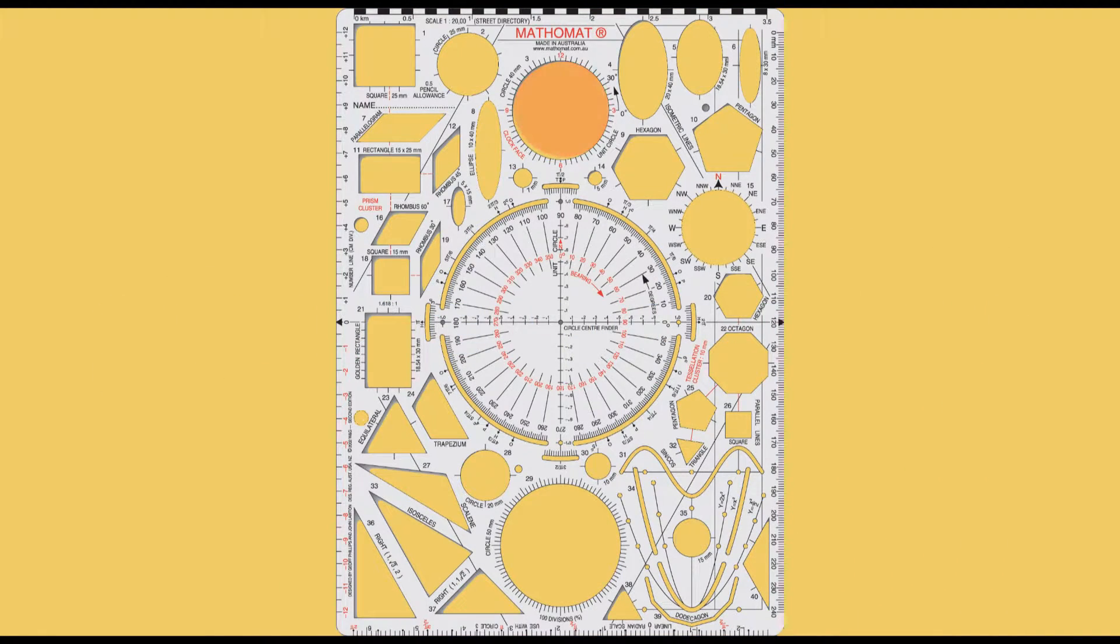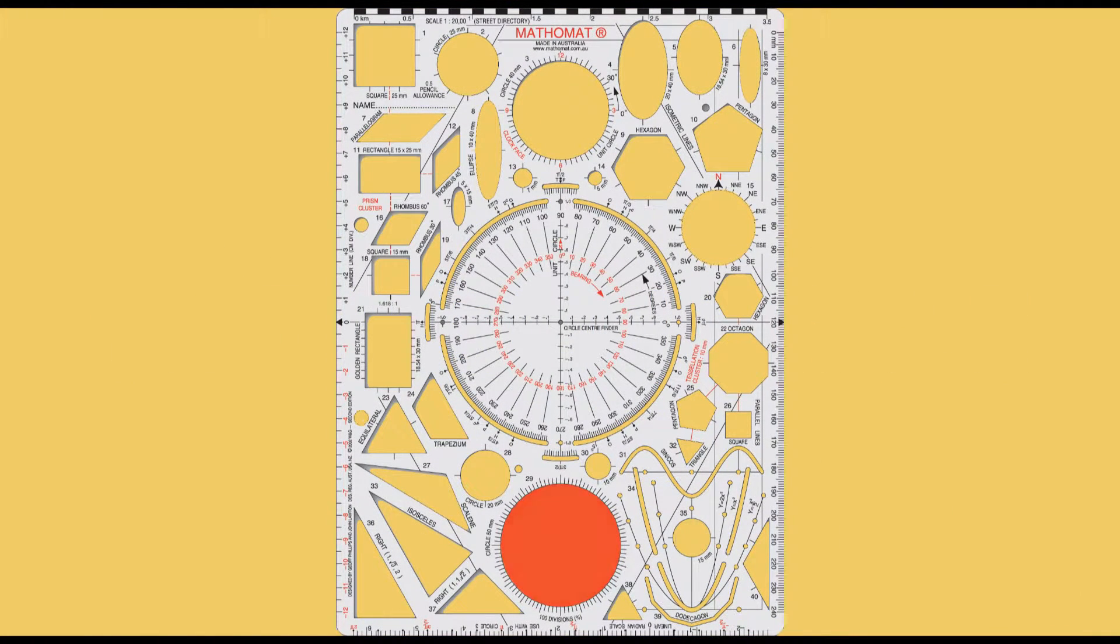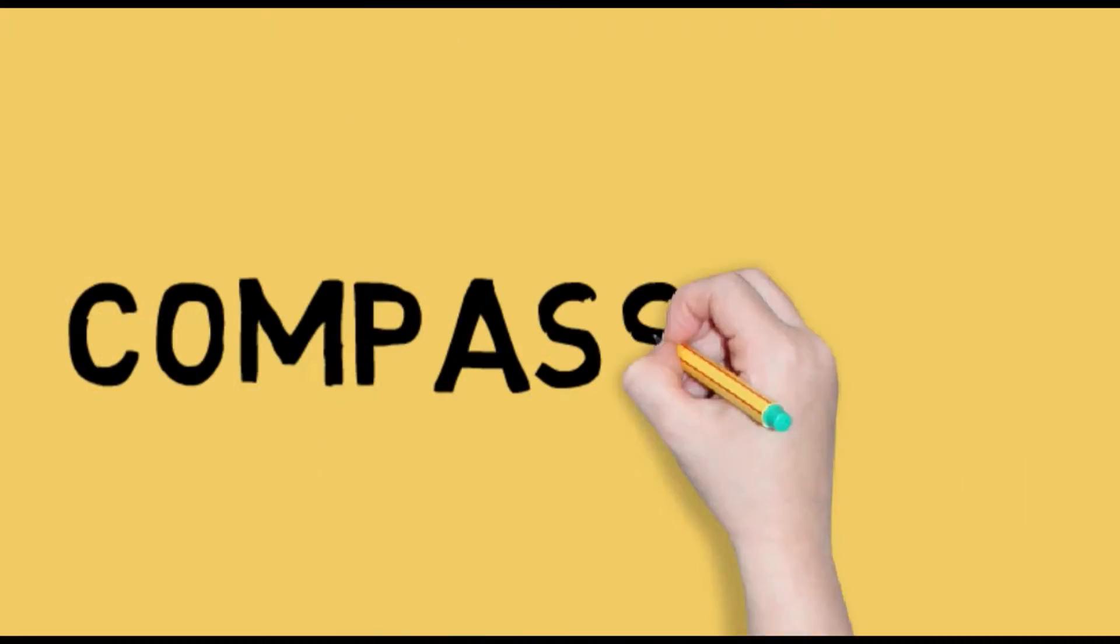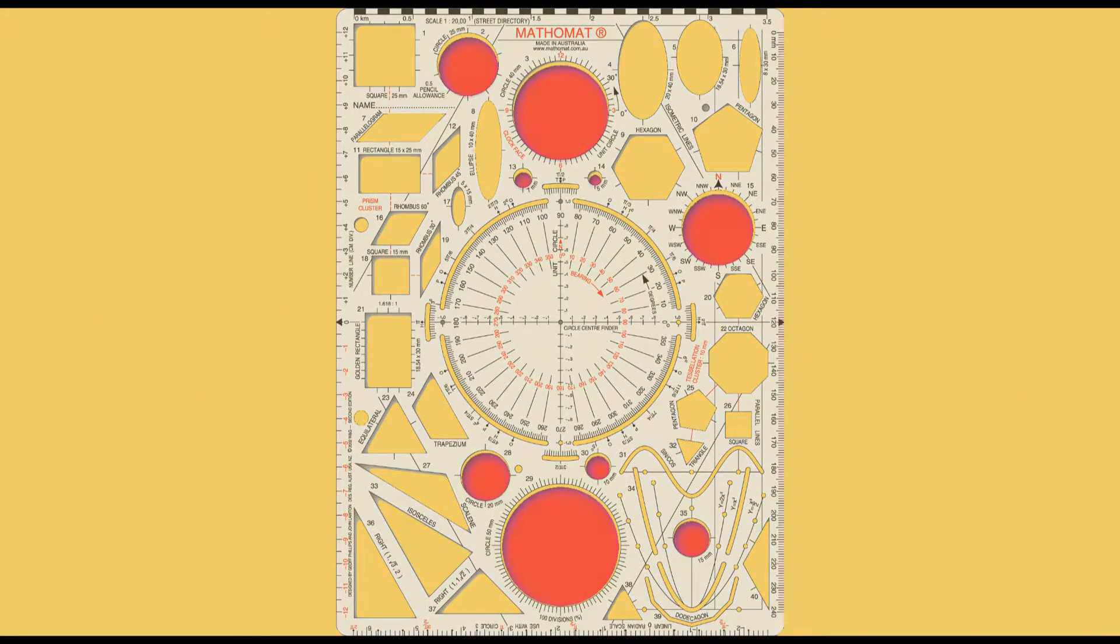Useful circles. Figure 3 is a clock face which can be used to teach time and can also be used as a unit circle. Figure 29. The circumference of this circle has been divided into 100 equal parts and is ideal for quickly representing percentages, particularly in relation to displaying statistical information in the form of a pie chart or pie graph. Figure 15 is a compass rose which can be used to teach direction.